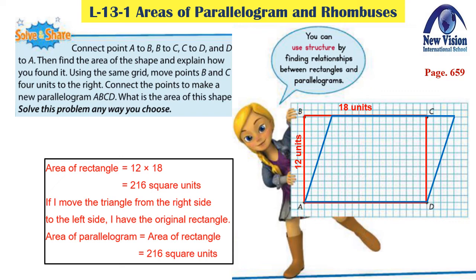Now let's do the other part of our question. Move points B and C 4 units to the right — our new shape is a parallelogram. To find its area, notice we get two similar triangles at the left and right. If we move the triangle on the right to the left side, we get the previous rectangle. This means the area of the new parallelogram is the same as the previous rectangle: also 216 square units.